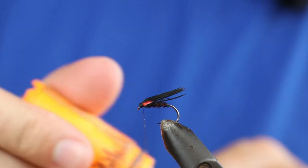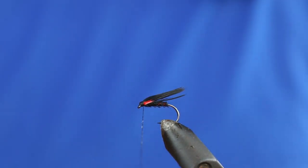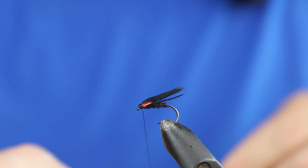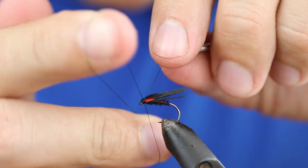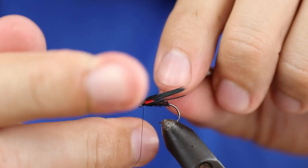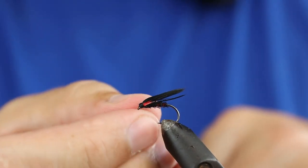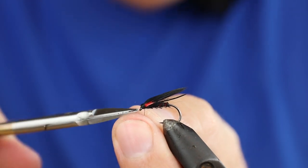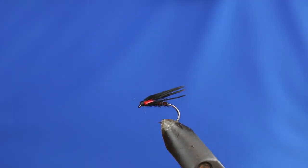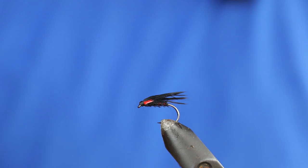And that's it. The whip finish: one double, two double. And that's your fly, the Cranberry Cormorant.